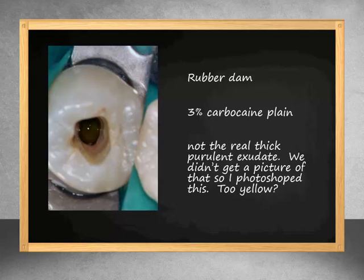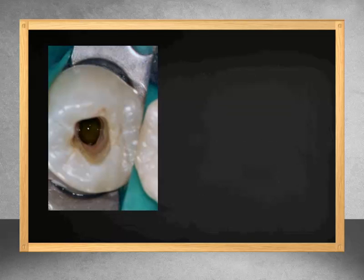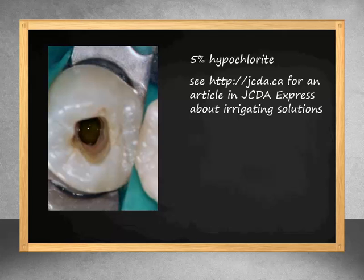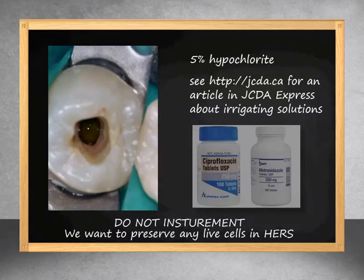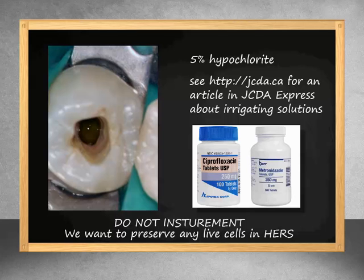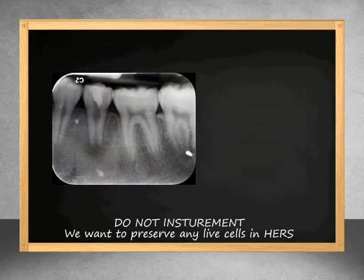The canal was irrigated for 10 minutes with a 5% solution of hypochlorite. The canals were dried with paper points and a mixture of bi-antibiotic paste was inserted into the canals with files. The access was closed with cotton, Cavit, and Temp. No instrumentation was done.